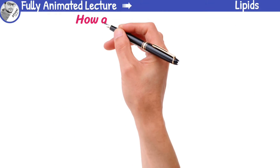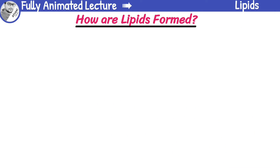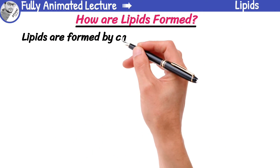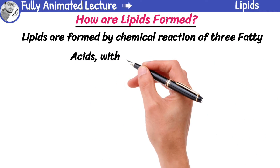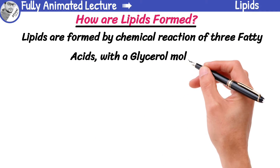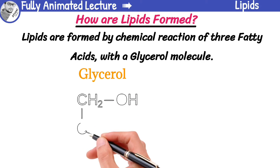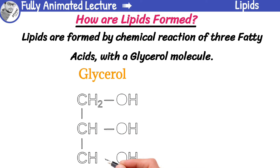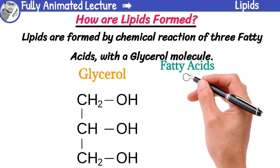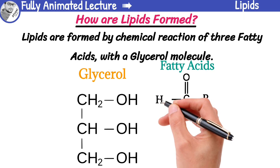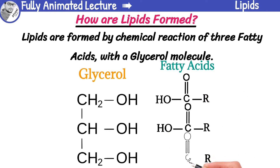So, let's understand how these lipids are formed from fatty acids. Lipids are formed by chemical reaction of three fatty acids with a glycerol molecule. Glycerol is a three-carbon molecule with an alcohol group attached to each carbon. Fatty acids, on the other hand, are long-chain hydrocarbons with a carboxylic acid group attached to one end.